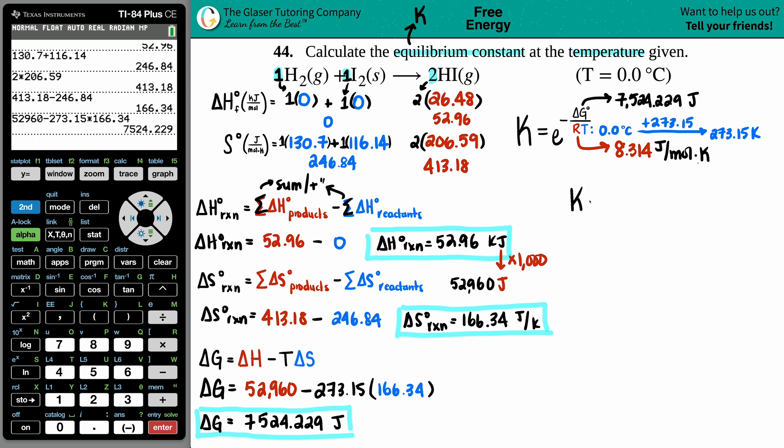We got all the variables now. Let's plug it in: K equals e raised to the negative fraction, the delta G value is going up on top - 7,524.229 - divided by those two values on the bottom. So we have the 8.314, that's the R value, and then we have the temperature value, 273.15.